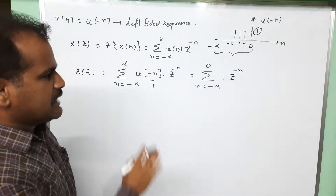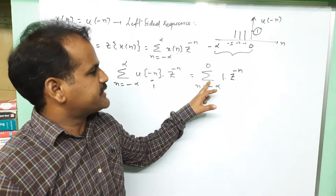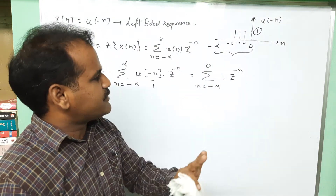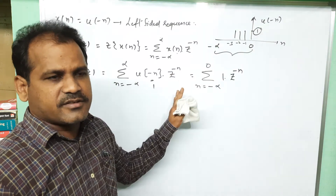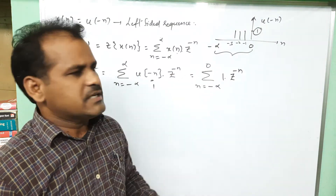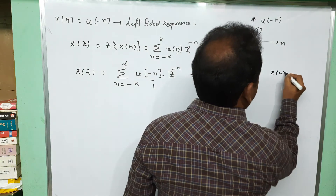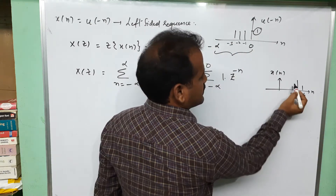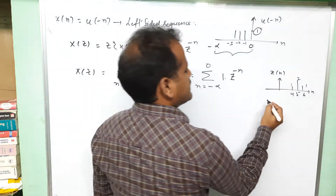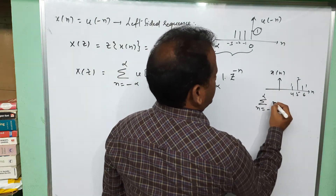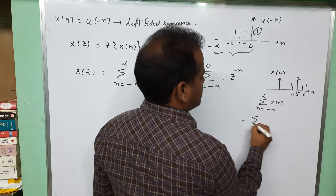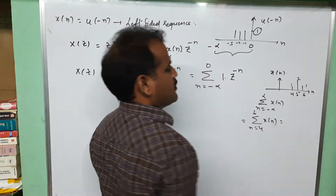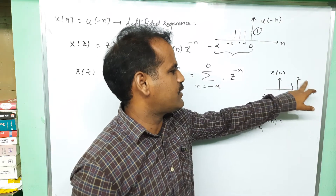We need to write this summation in terms of positive values of n. I will explain a concept for handling left-sided sequences that will be useful in future problems. Consider a signal x of n that exists from n equals 4 to 6 with amplitudes 1, 2, 1. The summation from n equals 4 to 6 of x of n gives 1 plus 2 plus 1 equals 3.